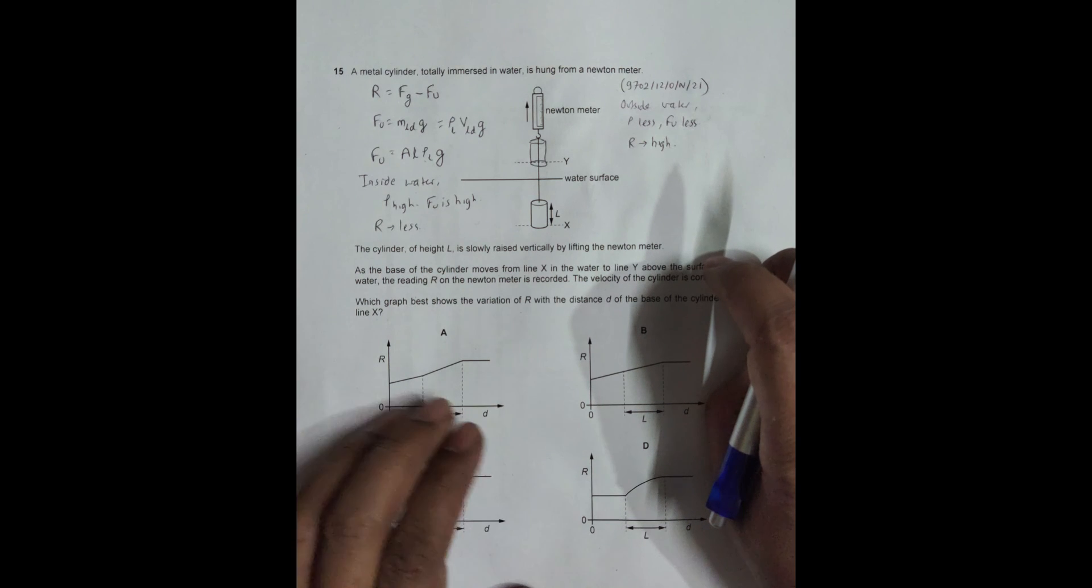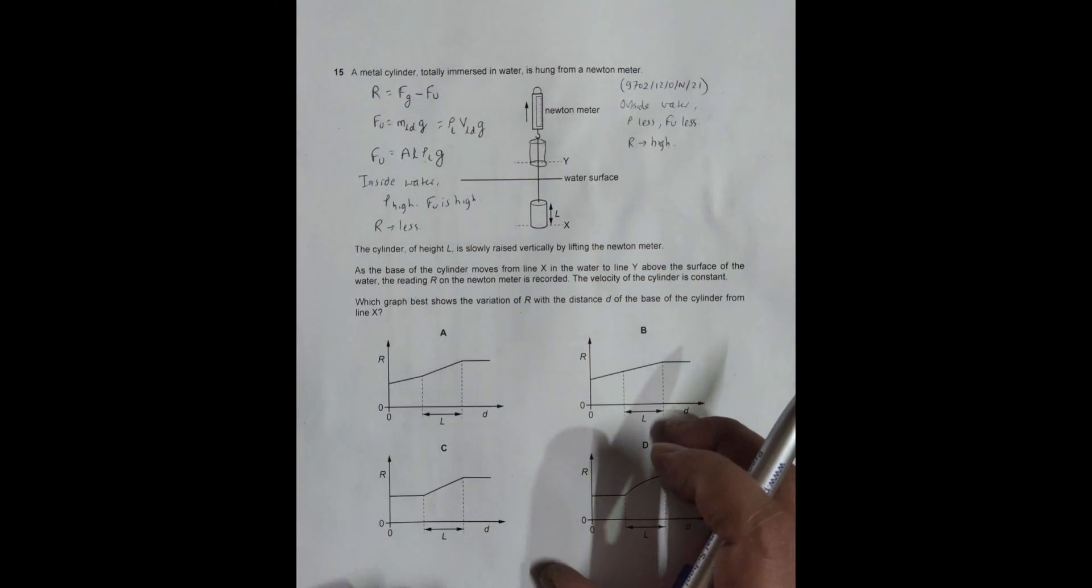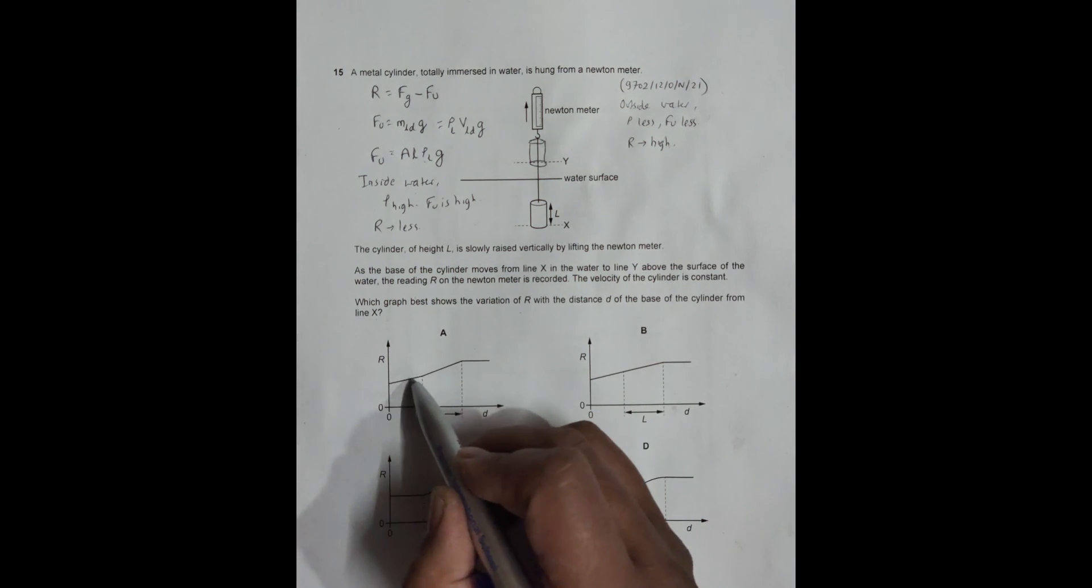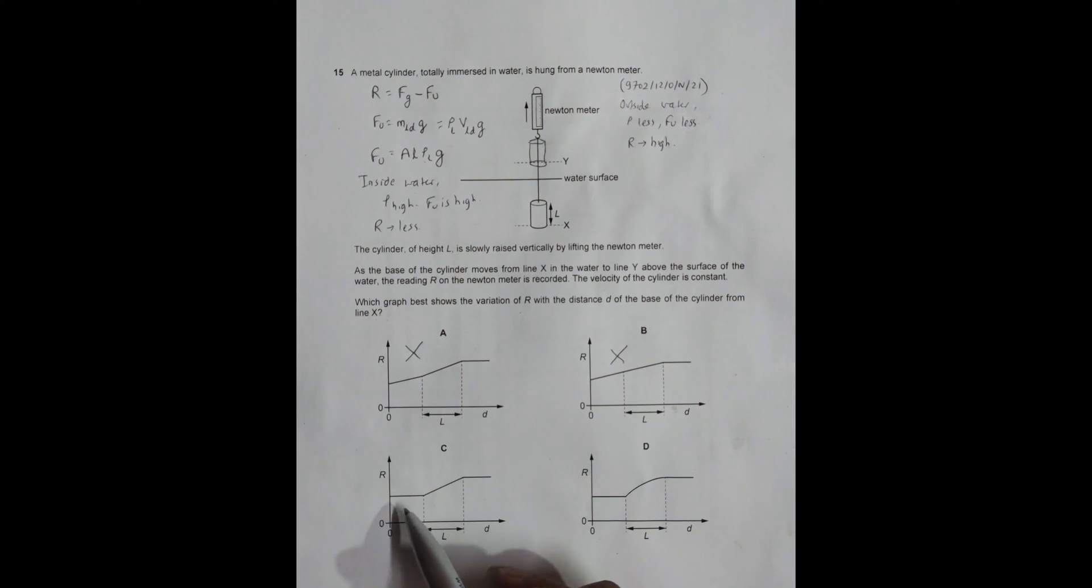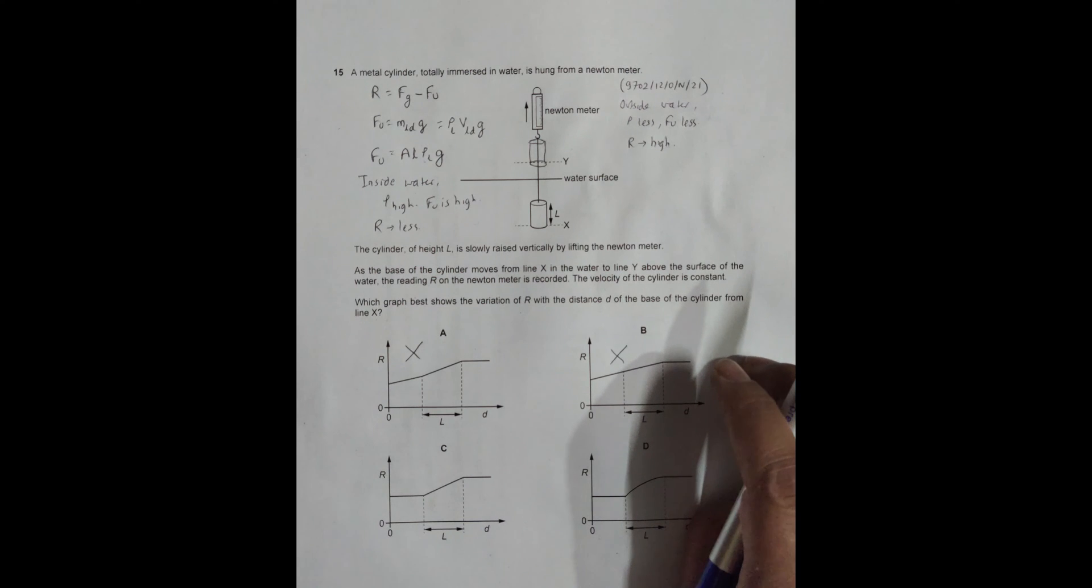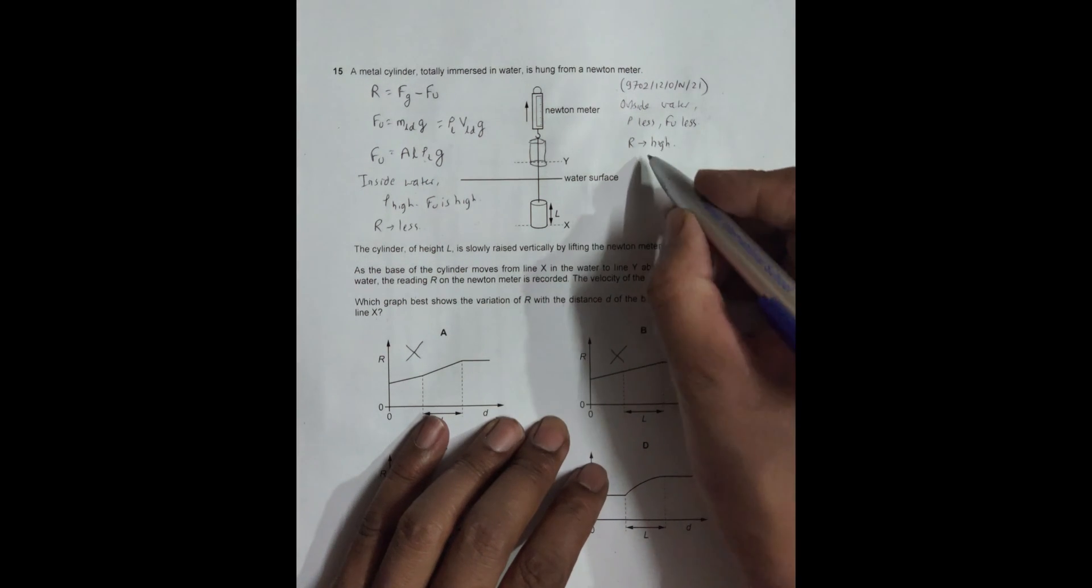That means here R is varying - this is wrong. Here also R is varying - this is wrong. R constant inside water, R constant outside water. These two things qualify, these two things disqualify.